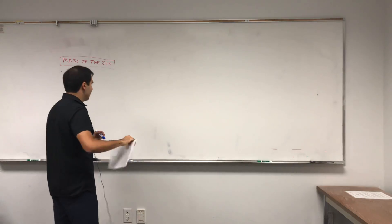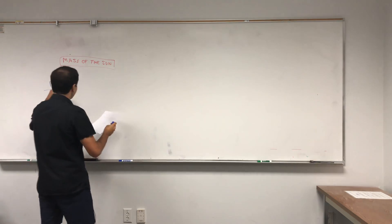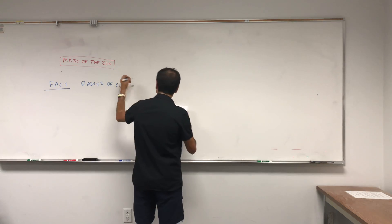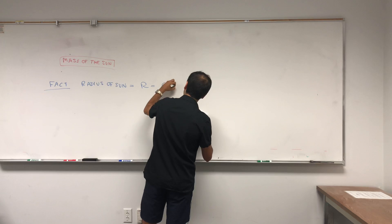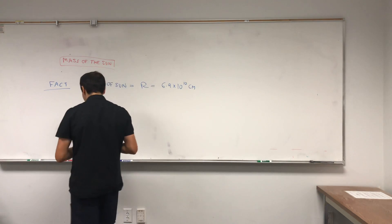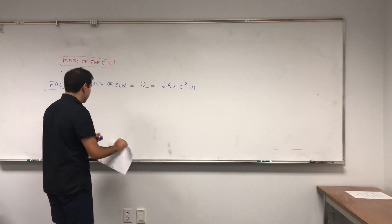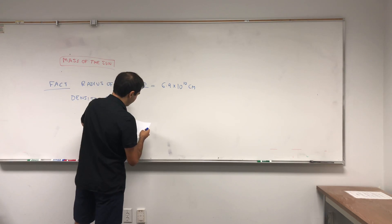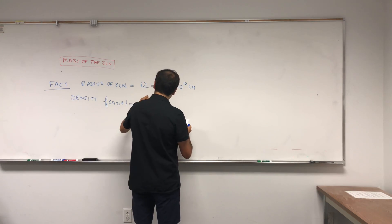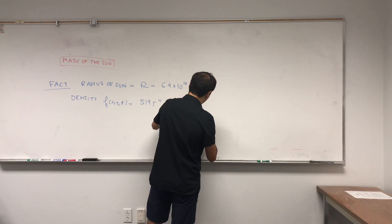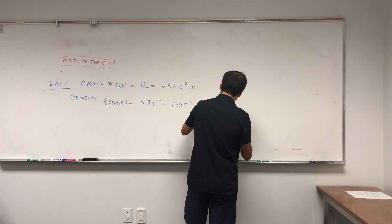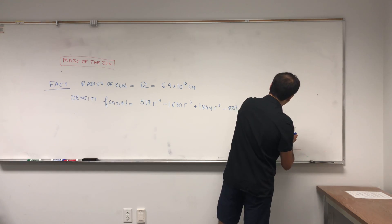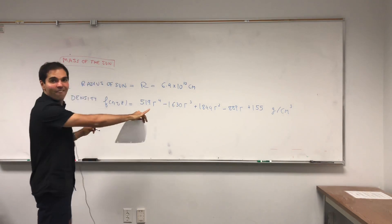Here are a couple of facts you need to know. First of all, the radius of the Sun is R, which is 6.9 times 10 to the 10 centimeters. Second, in order to find a mass you need a density. According to NASA's model, the density f of (x,y,z) is given by: 519r⁴ minus 1630r³ plus 1844r² minus 889r plus 155, in grams per cubic centimeters.